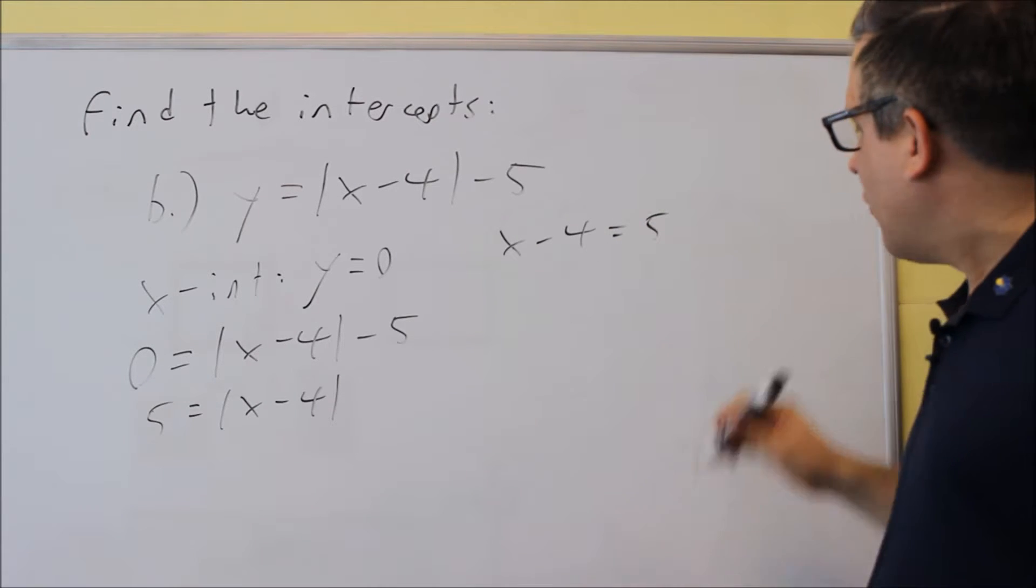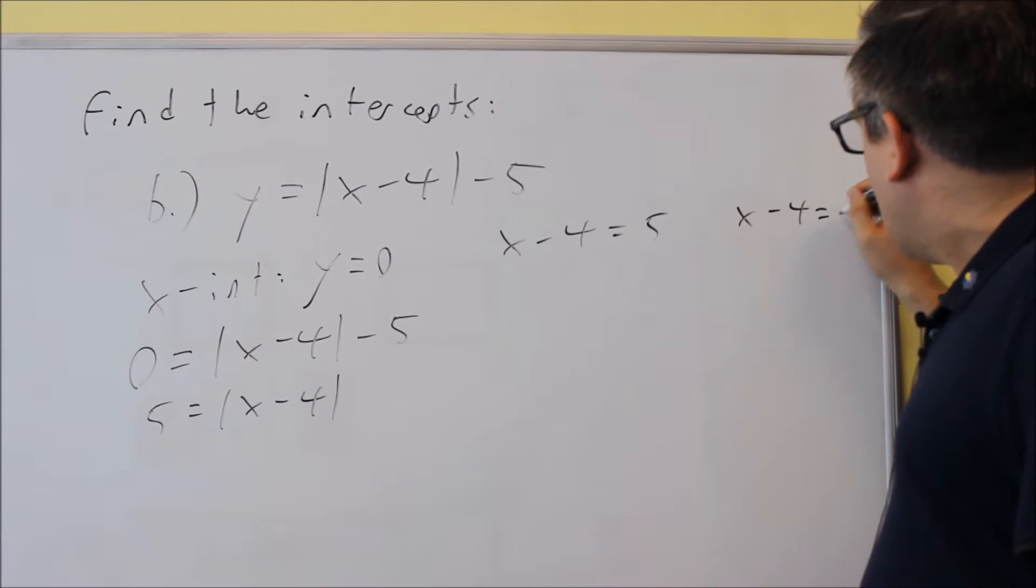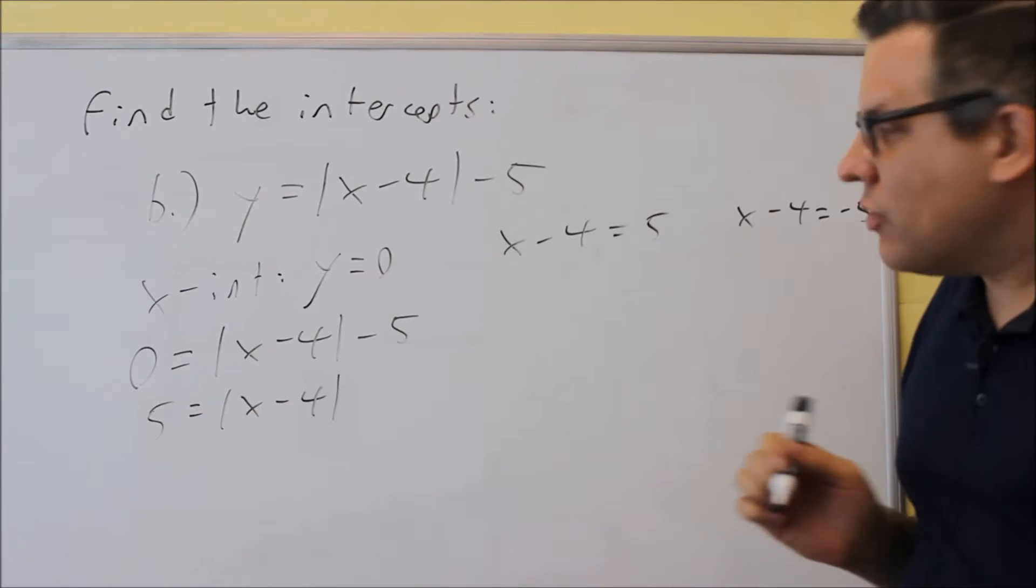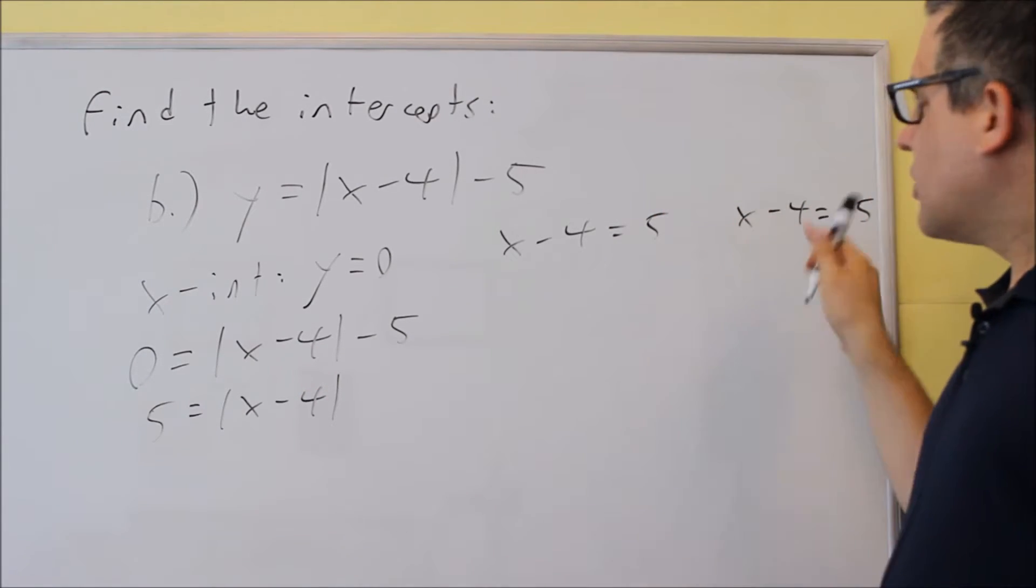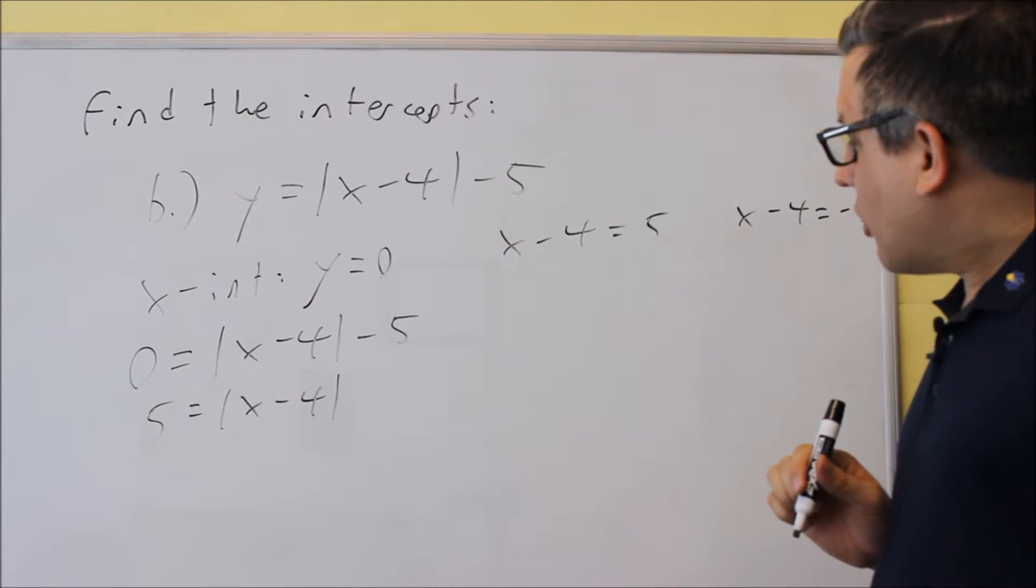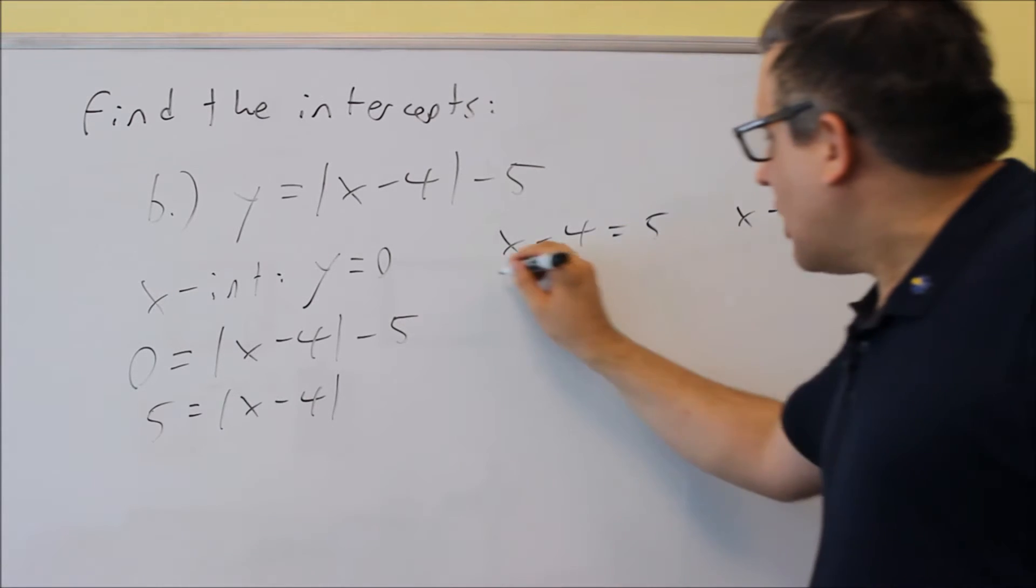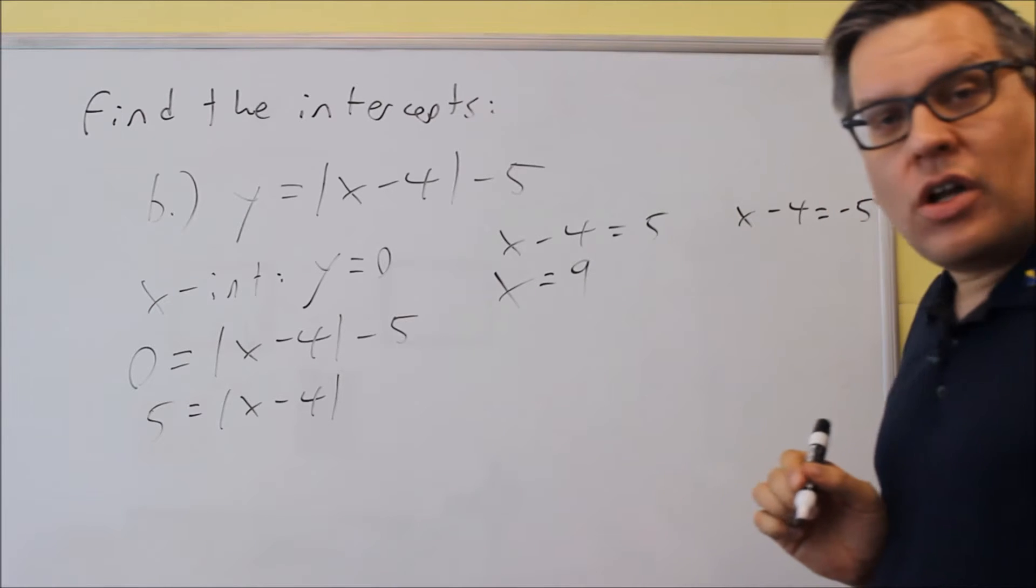We're going to do this one, x minus 4 equals 5. x minus 4 equals negative 5. So we're using exactly what we have inside the absolute value. We just do one positive and one negative to solve these kind of problems. We're going to add 4 to both sides and we get x is equal to 9.